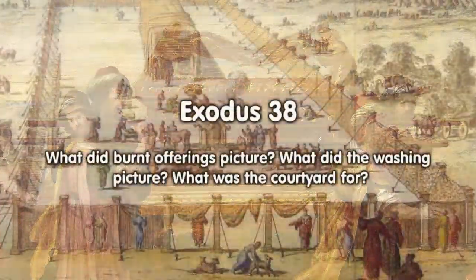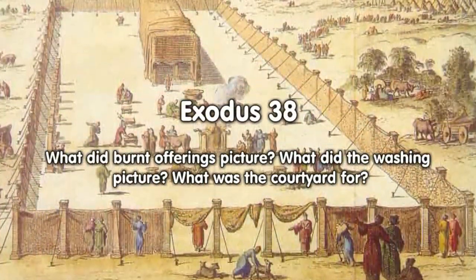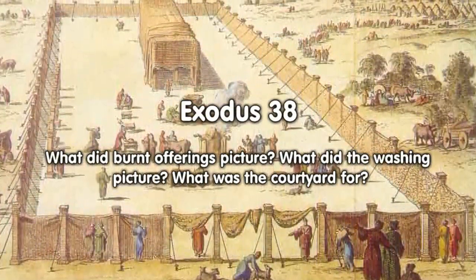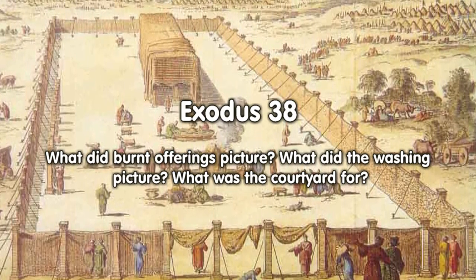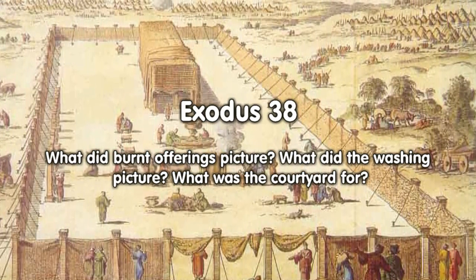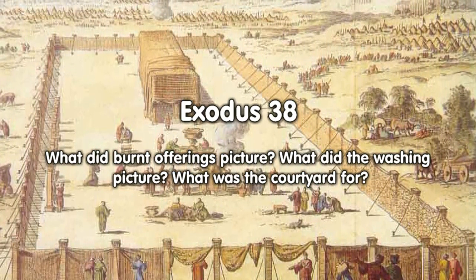In Exodus 38, what did burnt offerings picture? What did the washing picture? What was the courtyard for?